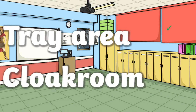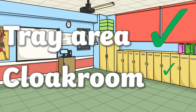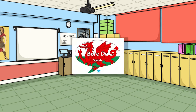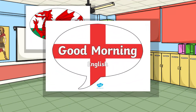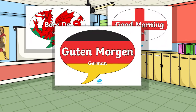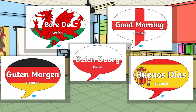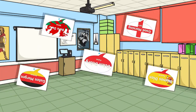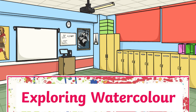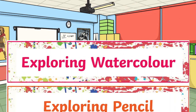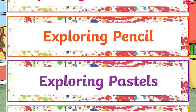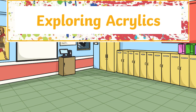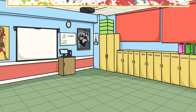As well as a tidy tray area and cloakroom, we know there are a lot more things that need to be organised. That's why we have beautiful mixed language good morning speech bubble display signs to welcome people into your gorgeous classroom, and Key Stage 2 sketchbook labels that not only organise your classroom but even help your Key Stage 2 children to organise their artwork in an attractive and meaningful way.